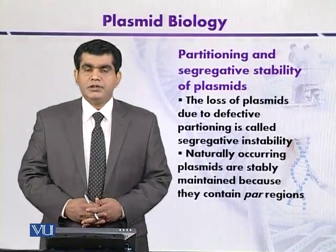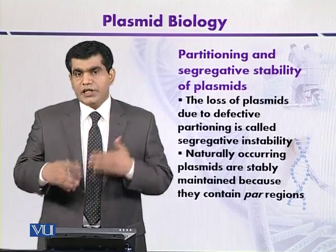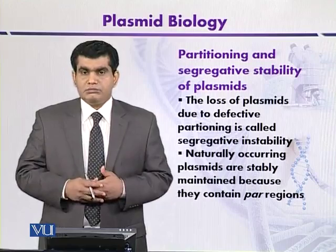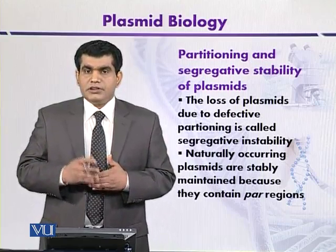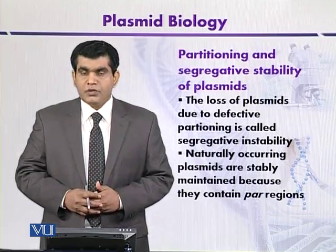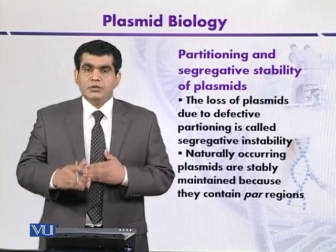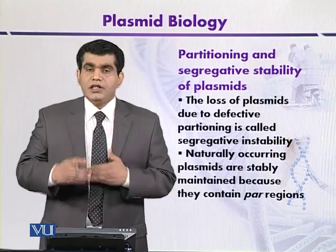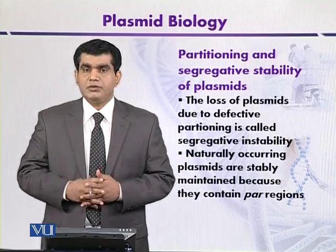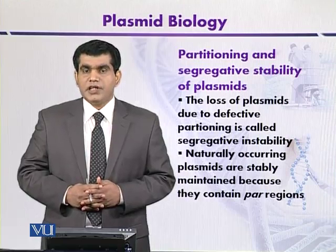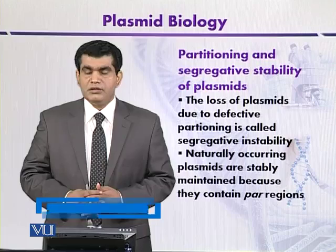Another aspect of plasmid is partitioning and segregative stability. When a cell divides, its nucleic acid — including the bacterial chromosome or plasmid DNA — is segregated equally into the daughter cells. But under some circumstances, during the course of cell division, plasmids are not transferred from the parent to the daughter cells. If the plasmid is lost during cell division, it is called segregative instability — that is, the plasmid is not stably maintained in the daughter cells.